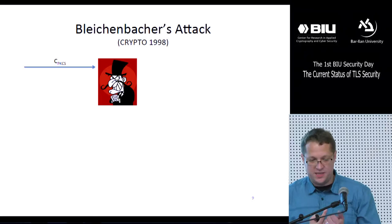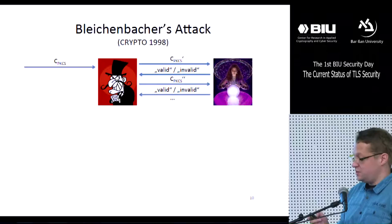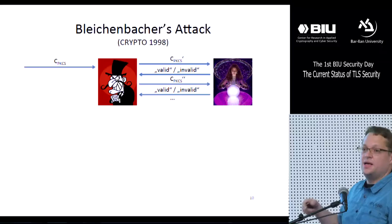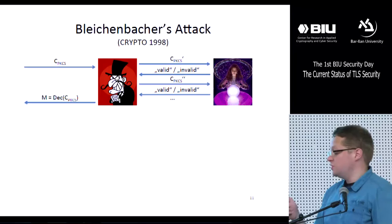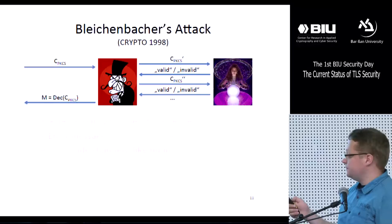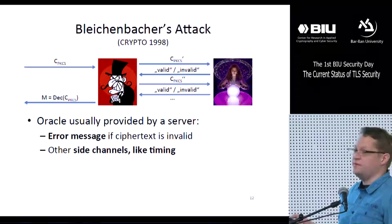The second preliminary is Bleichenbacher's attack, which works as follows. An attacker receives a PKCS ciphertext as input and has access to an oracle that helps distinguish valid from invalid ciphertexts. The attacker may create new ciphertexts, submit them to the oracle, and the oracle responds whether each ciphertext is valid or not. Bleichenbacher's algorithm shows how an attacker is able to recover the message encrypted in the target ciphertext from the oracle's responses. In practice, this oracle is usually provided by a web server that responds with an error message if a given ciphertext is invalid.